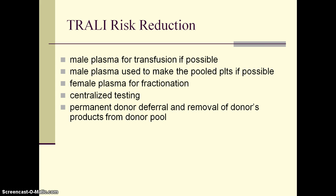To reduce the risk of TRALI, CBS has undertaken various strategies. Male plasma is used for transfusion as much as possible, including to pool four donors' platelets into one bag for pooled platelets. Female plasma tends to be diverted for fractionation to make fractionated blood products. There is now centralized testing for TRALI, and any donor implicated in TRALI is permanently deferred, with their products removed from the donor pool.